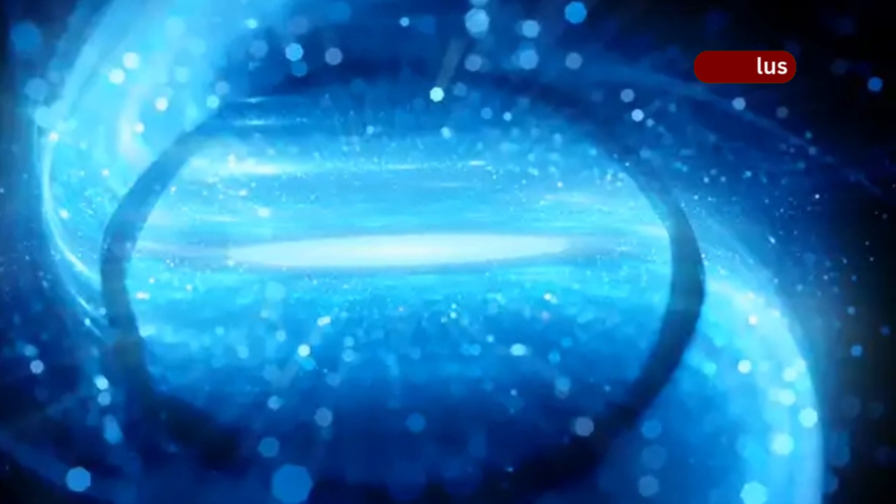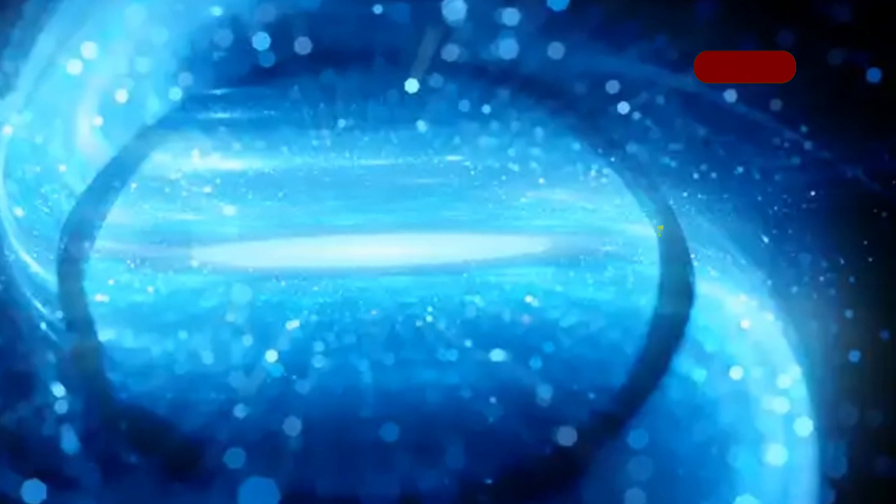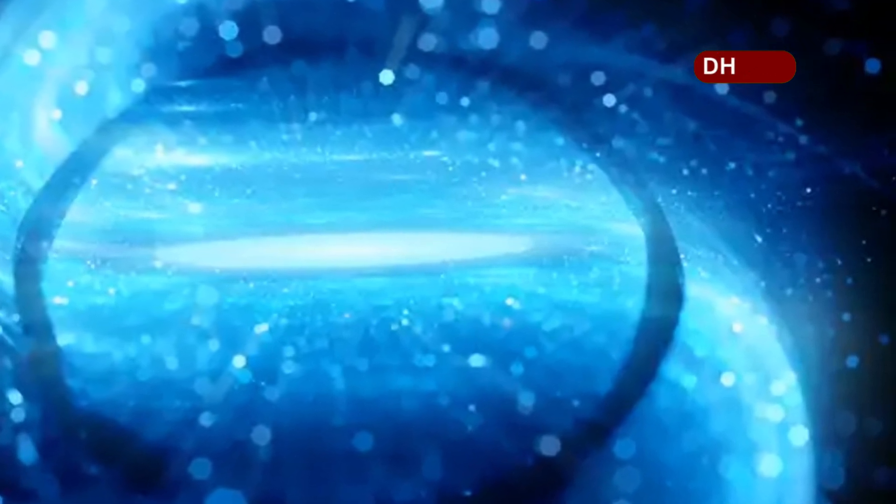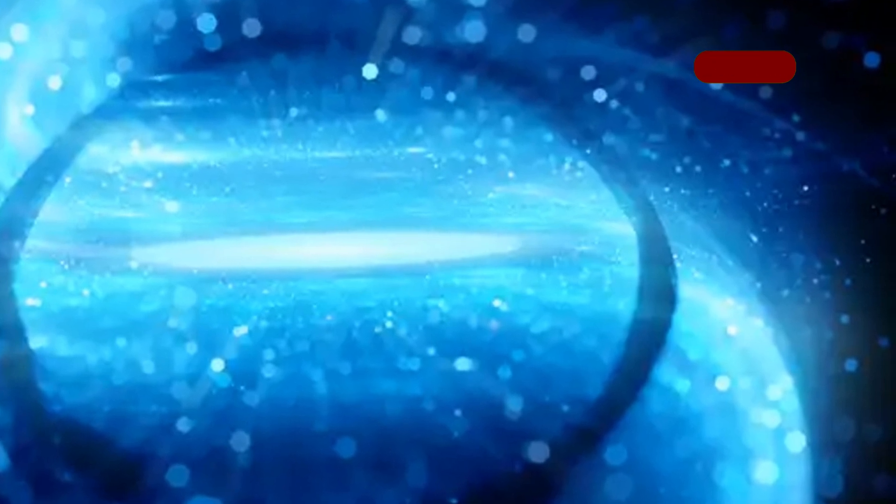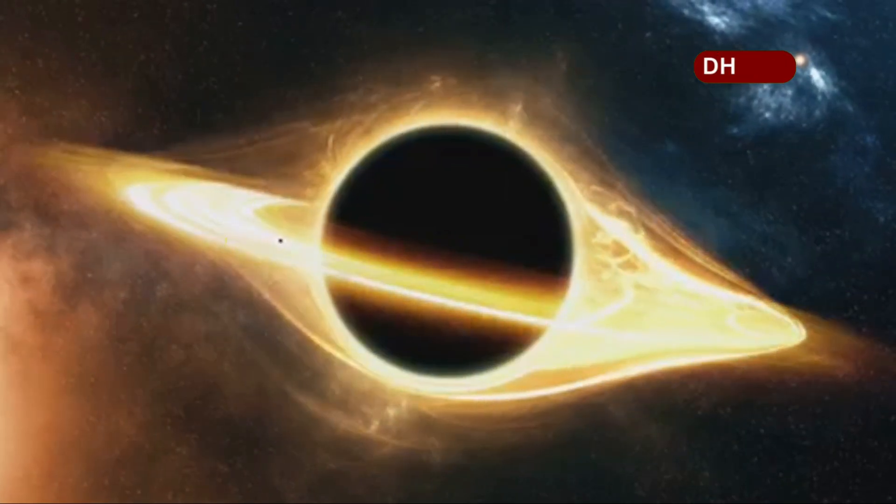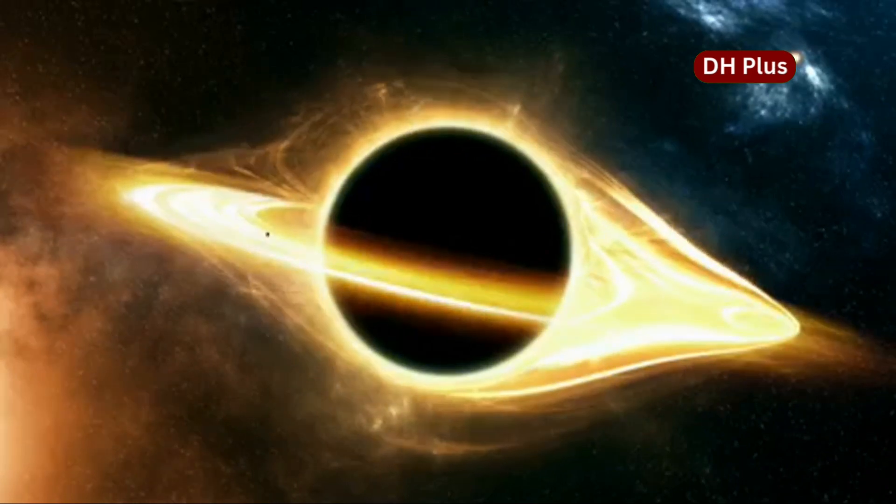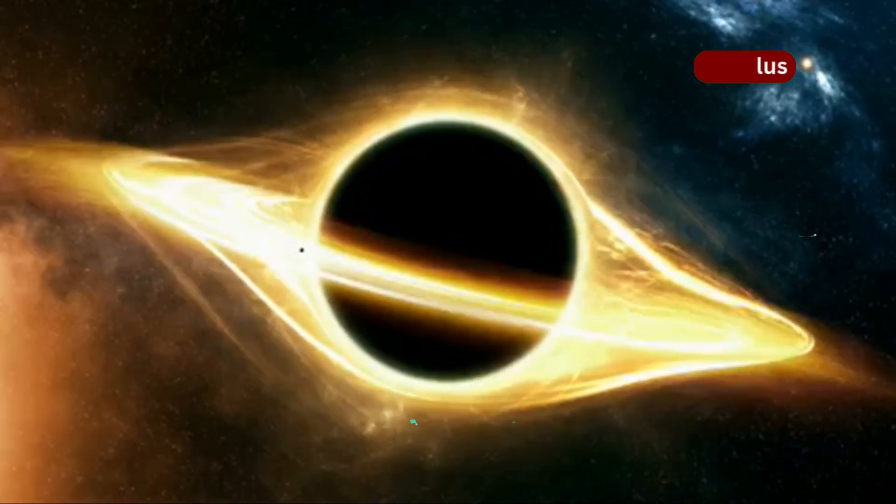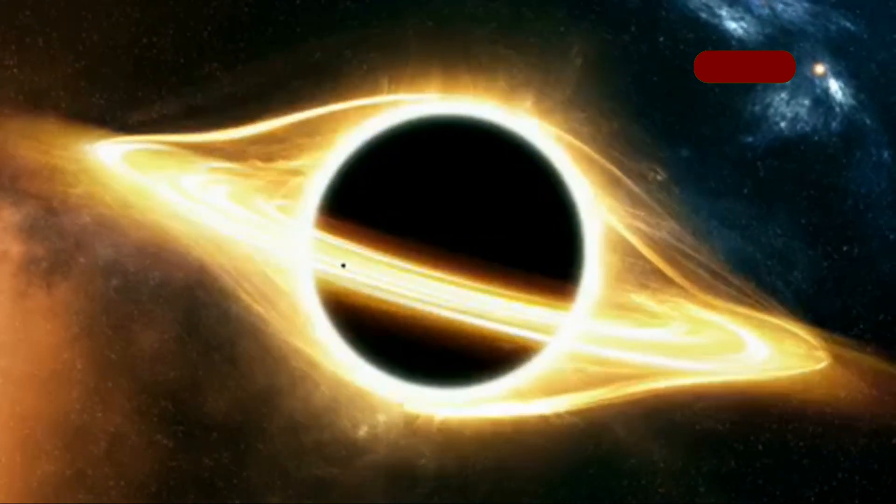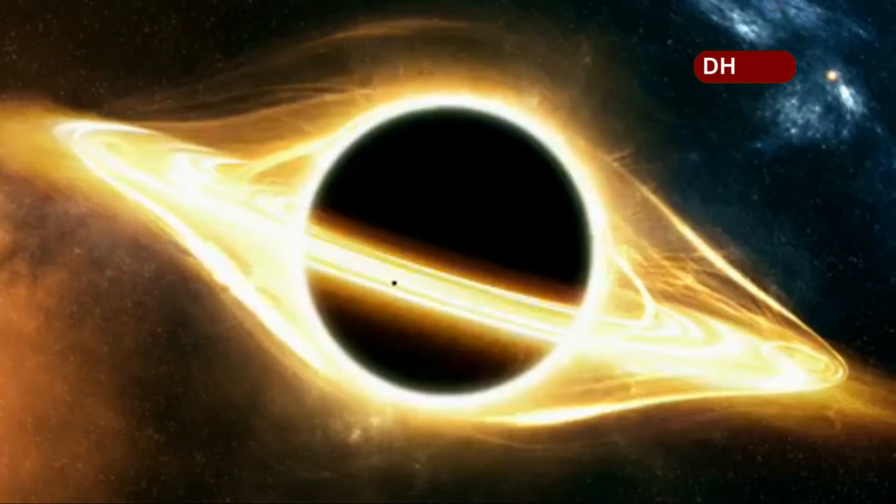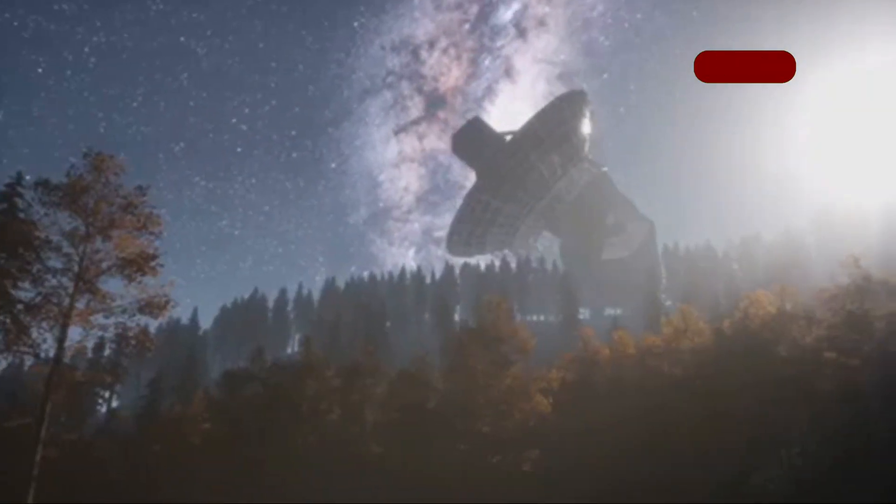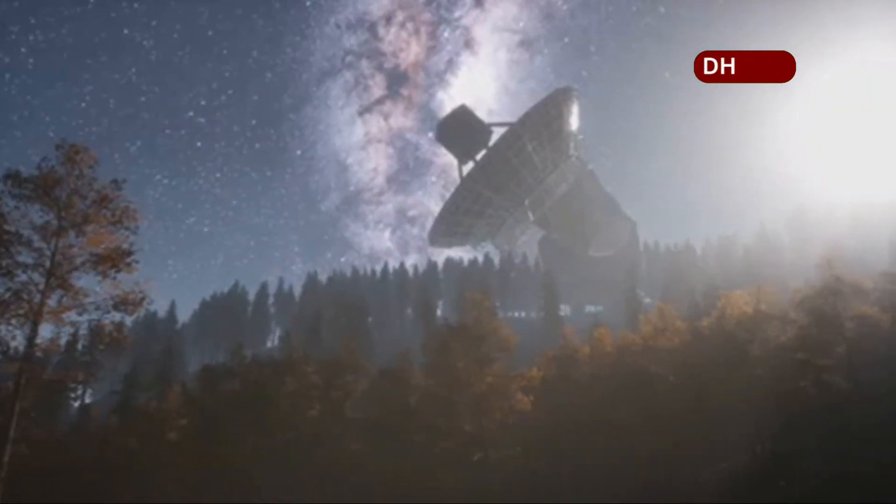In one of the most baffling findings yet, Webb detected a gravitational lensing effect in a completely empty patch of space. No visible stars, no galaxies, not even a black hole. Light from even more distant galaxies bends, twists and warps as if pulled by something massive, something invisible. Astronomers have tentatively pointed to dark matter as the cause. But in this case, the lensing effect is too strong, too focused. It doesn't behave like a diffuse halo of dark matter.